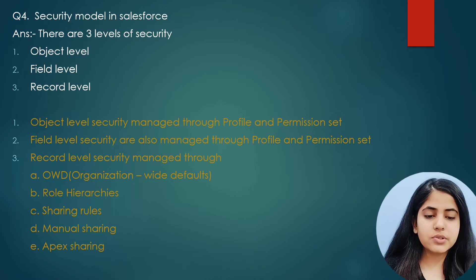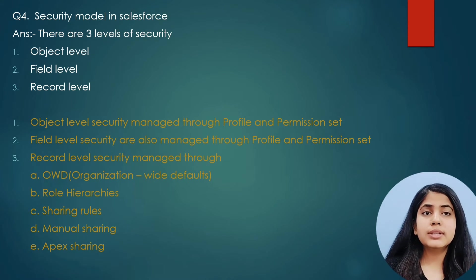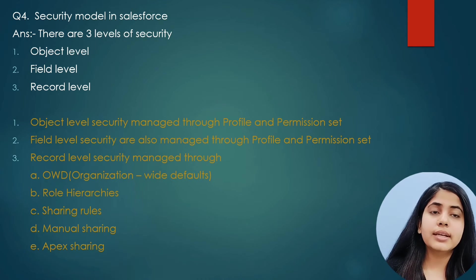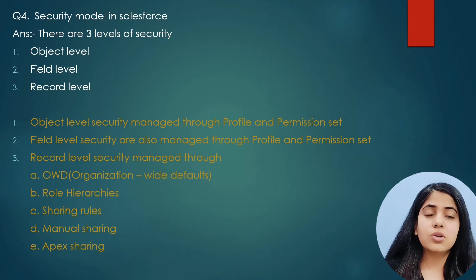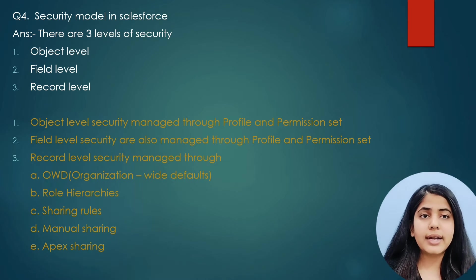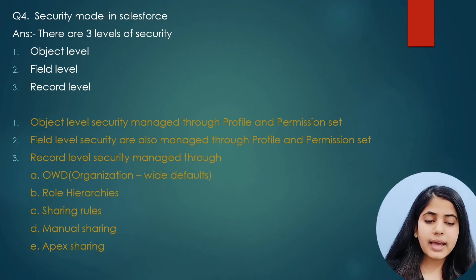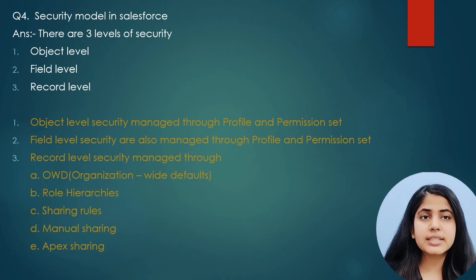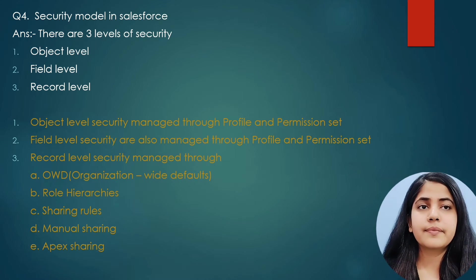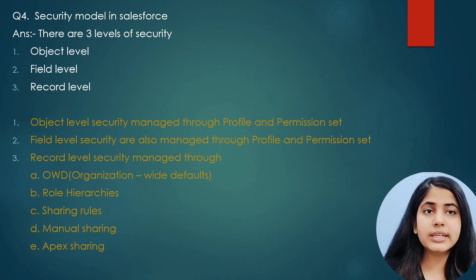The next question was: what are the security models in Salesforce? There are three levels of security. First is object-level security, then field-level security, and then record-level security. Object-level and field-level security are both managed through profiles and permission sets. Record-level security can be managed through OWD (Organization-Wide Defaults), role hierarchy, sharing rules, manual sharing, and Apex sharing. If you want more details about the security model, let me know in the comments and I will cover more details about these things.